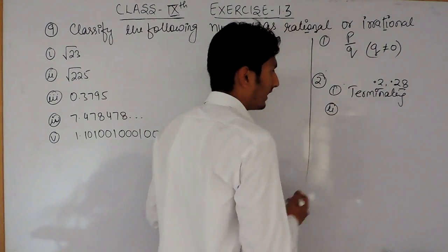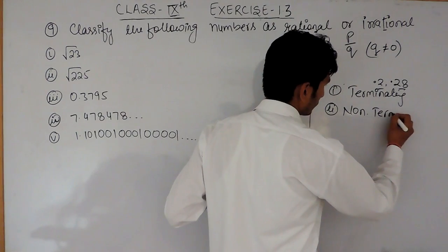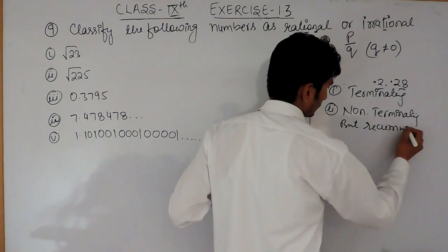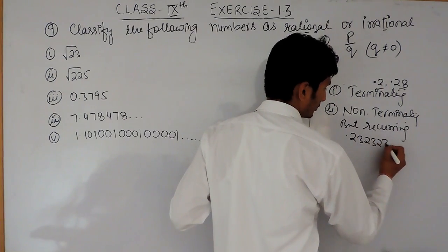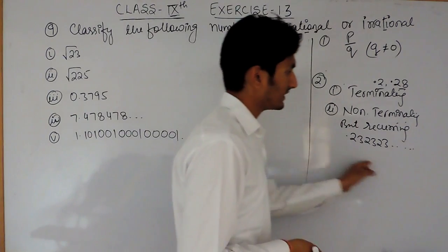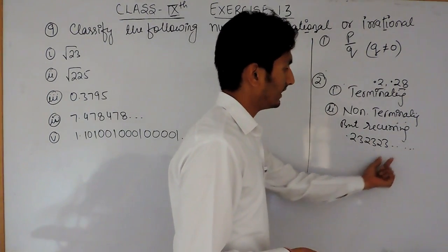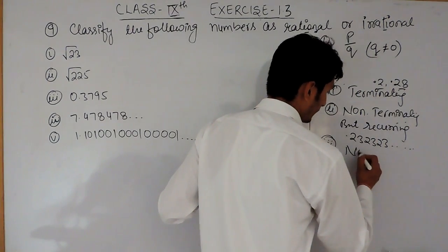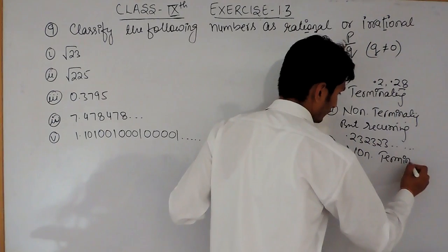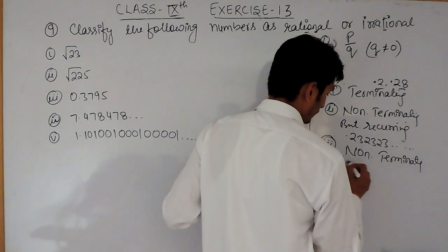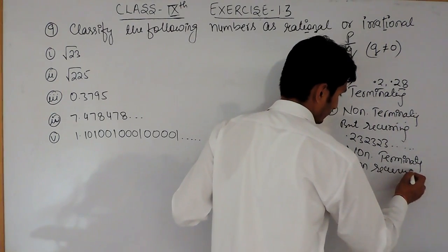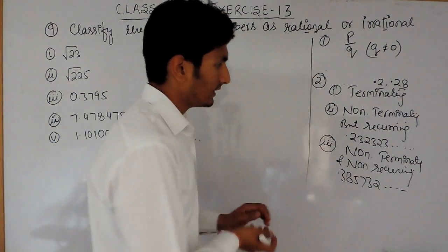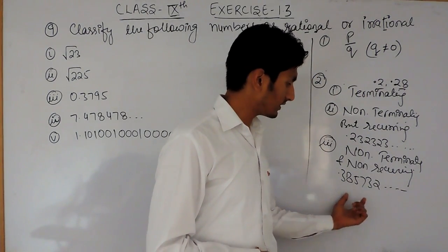The second type is non-terminating but recurring, like 0.232323... Here, 23 is repeating itself. These are non-terminating but recurring. And there is another type of decimal that is non-terminating and non-recurring — for example, 0.385732 and so on. This is a number that is non-terminating and non-recurring, with no digit repeating itself.